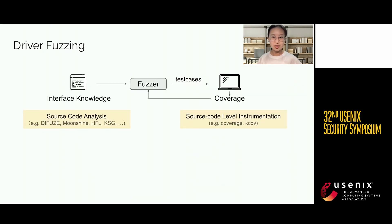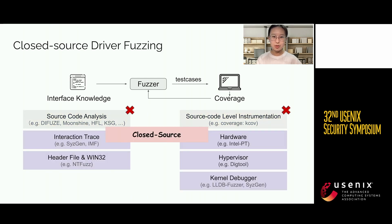Driver fuzzing is not a new topic. Quantities of works have discussed how to identify driver interfaces via source code analysis and how to collect coverage via source code level instrumentation. But when it comes to closed source drivers, things become a little complex. Existing work uses other supports like system invocation traces, hardware support, and hypervisors to facilitate fuzzing.